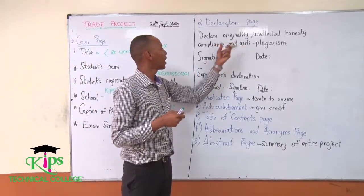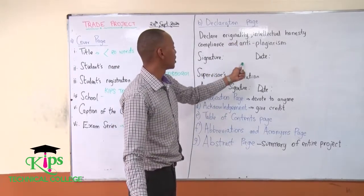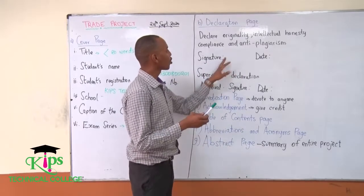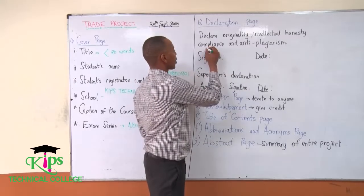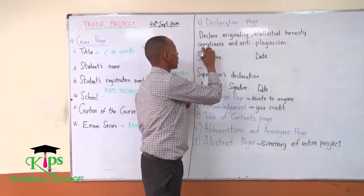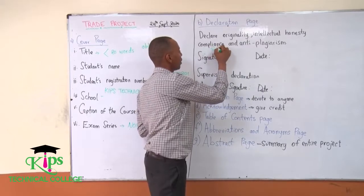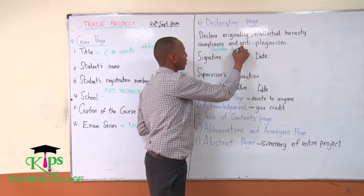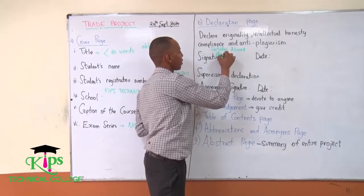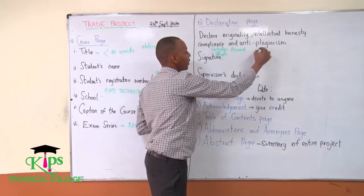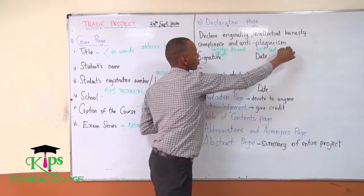After you've declared the originality and the anti-plagiarism, the next thing you add is your signature and your name. You write your name — for example, 'This project has been presented by Saifuddin Ahmed' — then the signature and then the date.